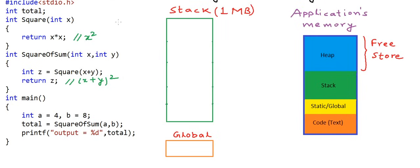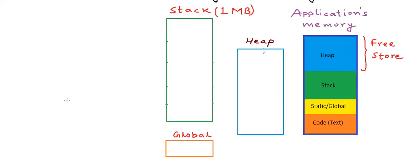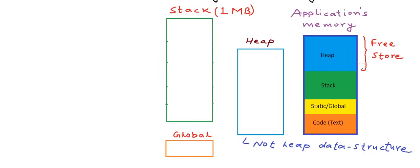Let us now see how to use the heap in our C or C++ program. One more thing I must point out: heap is also one data structure, and if you do not know about it yet, you will learn about it in your data structure course. But this nomenclature here has nothing to do with the heap data structure. The term heap here is used only for the large free pool of memory. Stack is also one data structure, and the stack segment of memory is actually an implementation of the stack data structure, but heap here is not an implementation of the heap data structure.